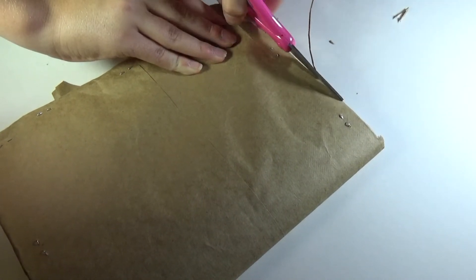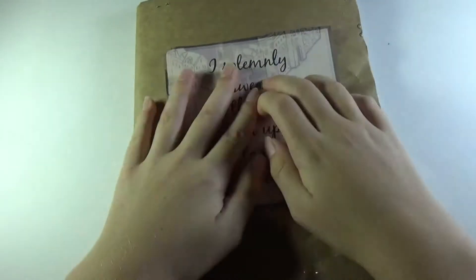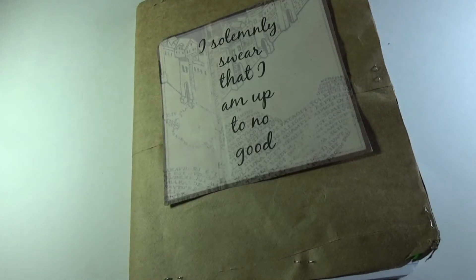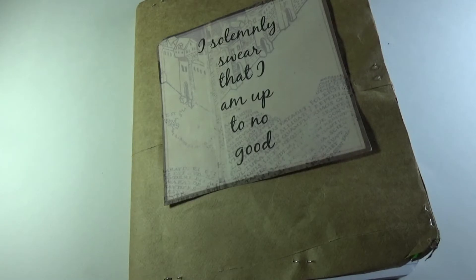Then you just want to take the paper bag and cut it out to align with the notebook because I didn't have it all the way even. But if yours is even then you don't need to worry about that. And then cut out the quote and glue that onto the notebook. You're going to wait until that dries and then you are completely done with your notebook.